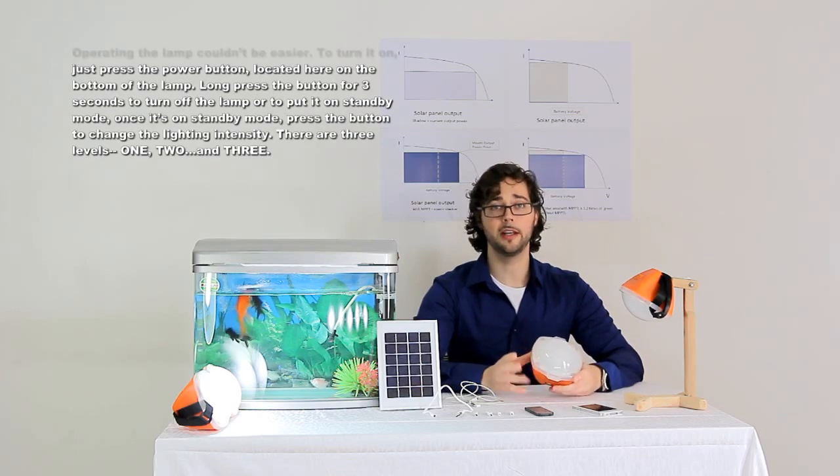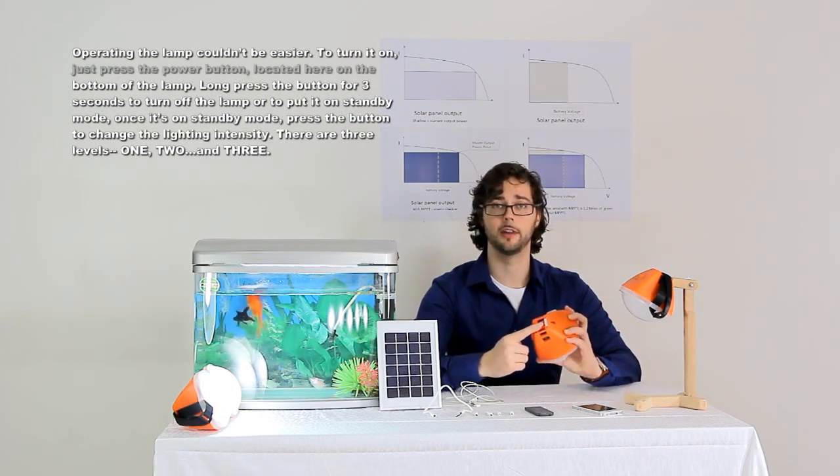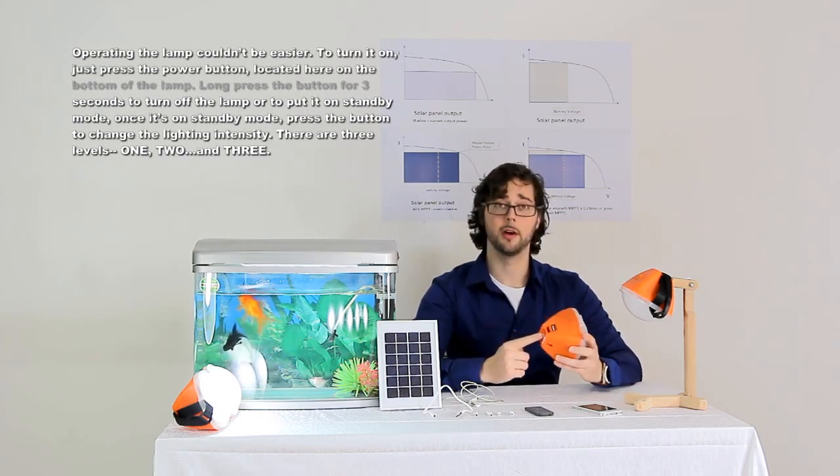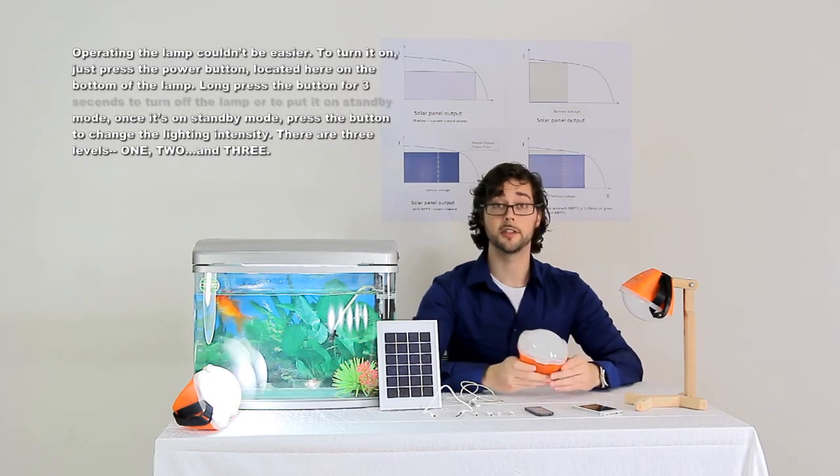Operating the lamp couldn't be easier. To turn it on, just press the power button located here on the bottom of the lamp. Long press the button for three seconds to turn off the lamp or to put it on standby mode.